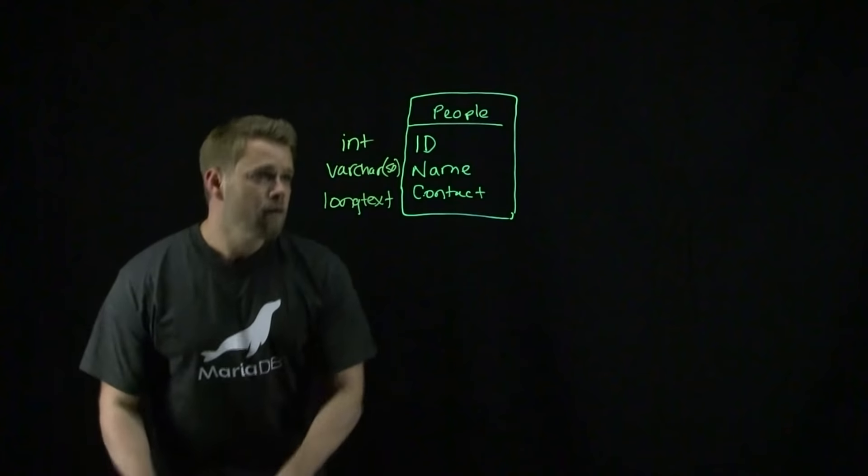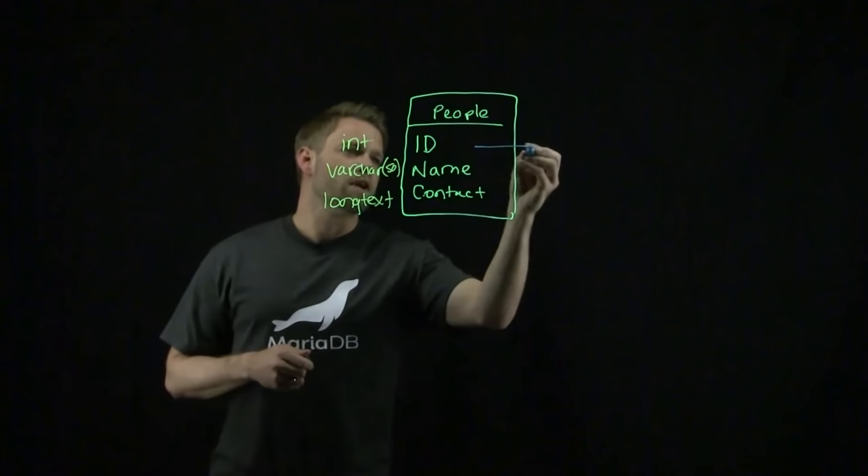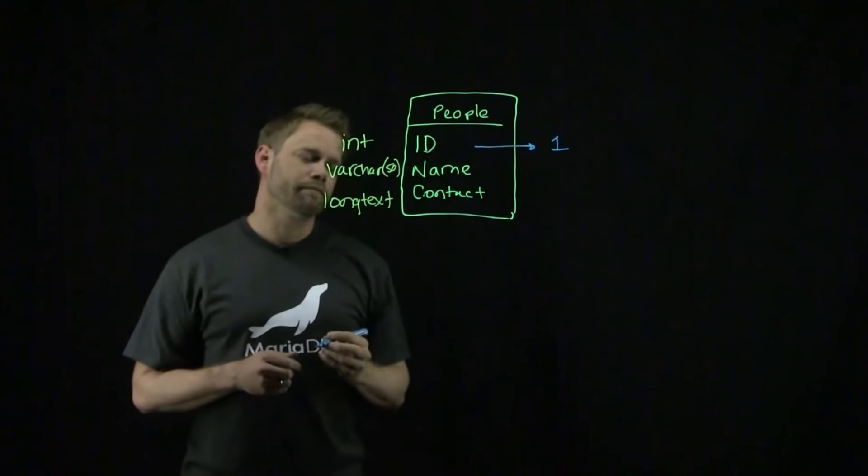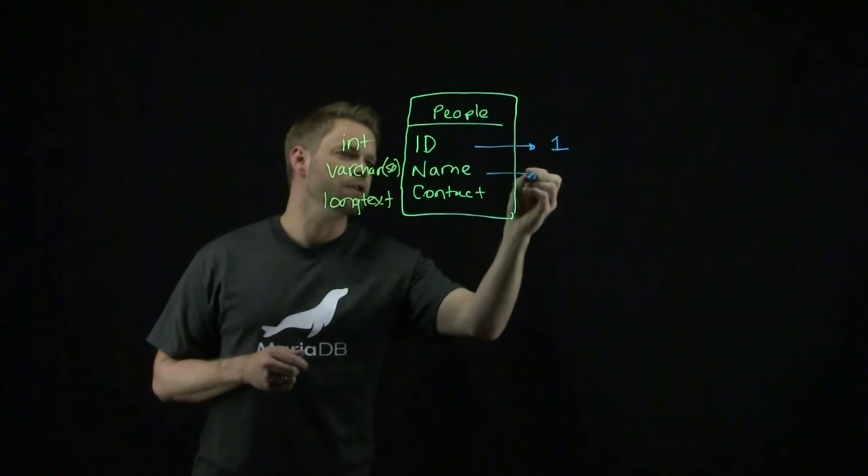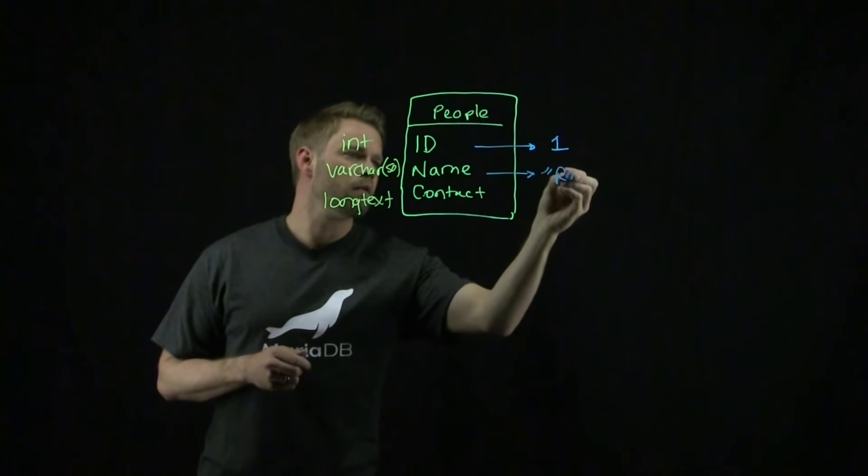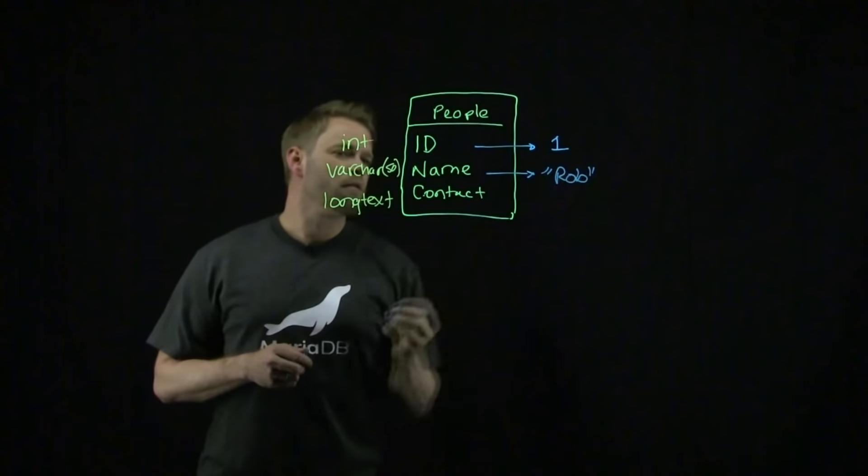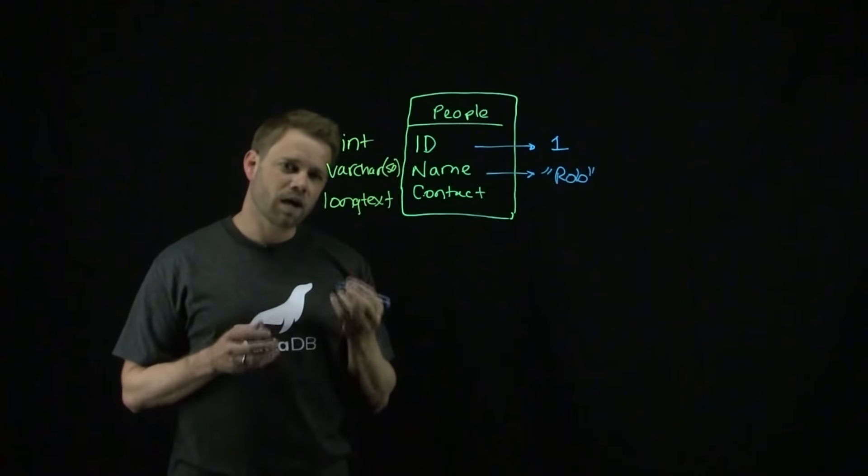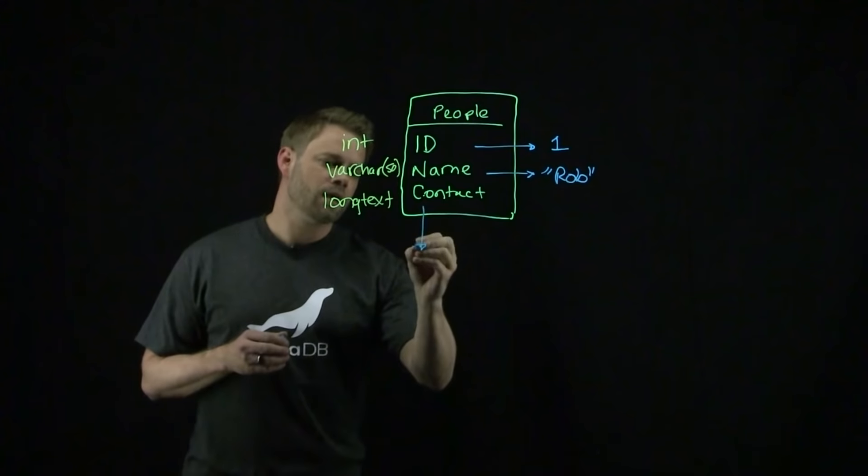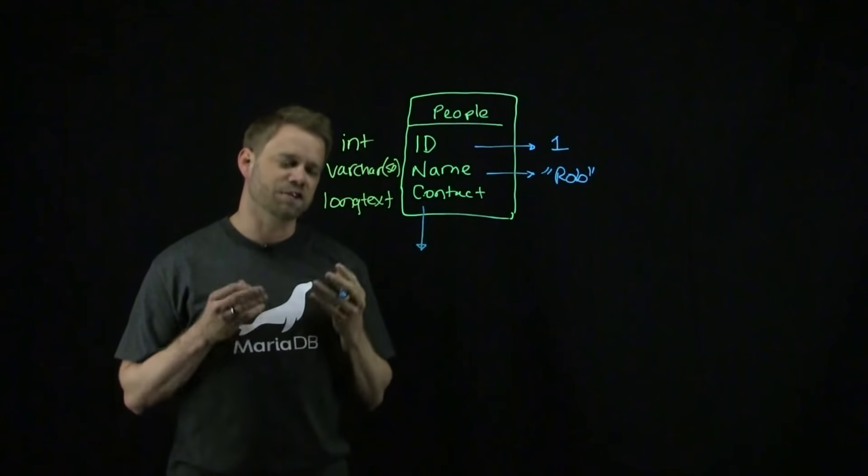For the ID, we'll start with ID number one. We'll use my name, Rob, for the name. And for contact, this is where we're going to insert our JSON information.